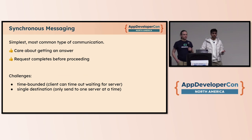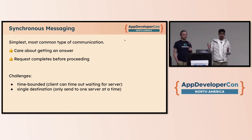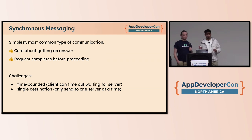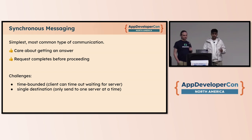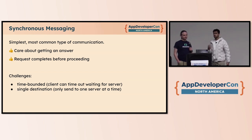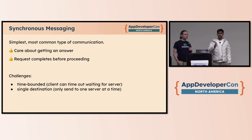Synchronous messaging is the simplest format of messaging. There's a client and a server — you just send a request, wait for that component to reply, and you are blocked until then. You get the response back and complete whatever you wanted. The challenge with synchronous is that it's time-bounded. You can add retries, but it's still time-bounded. And it's a single destination — you can only send to a single server at a time.